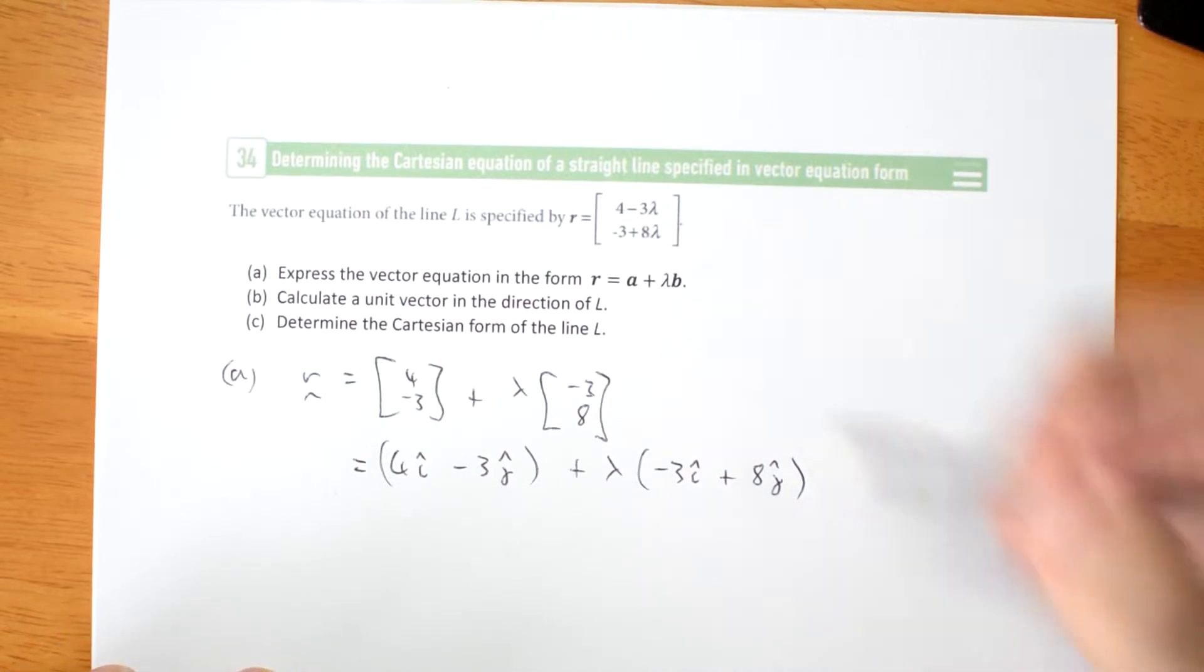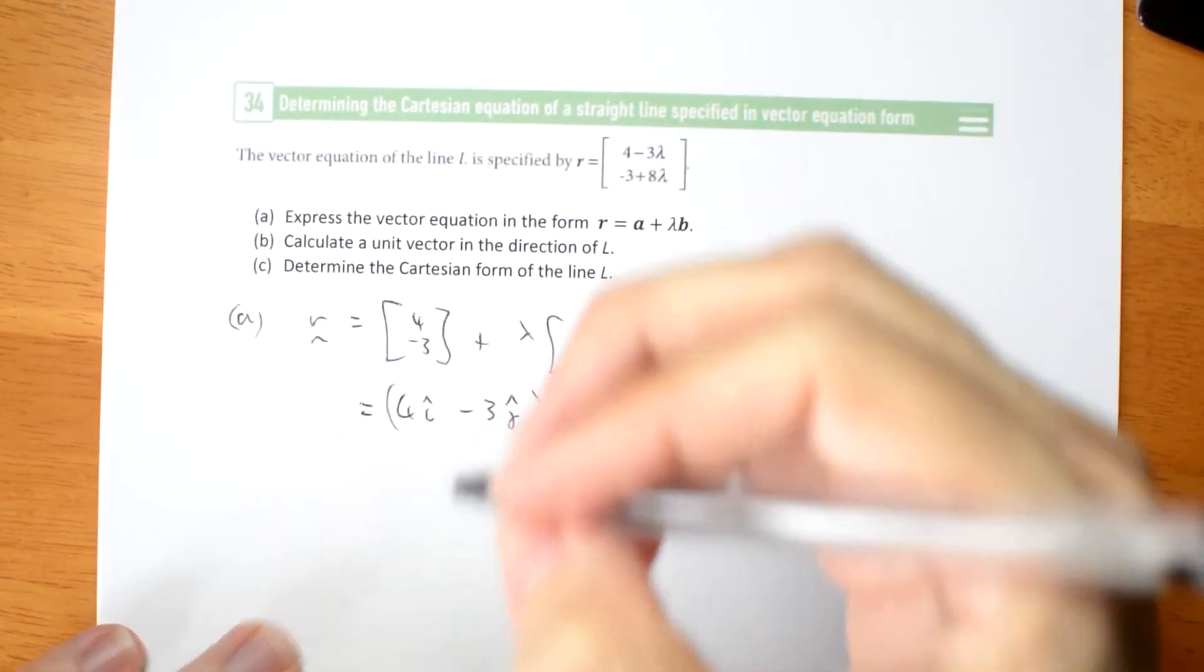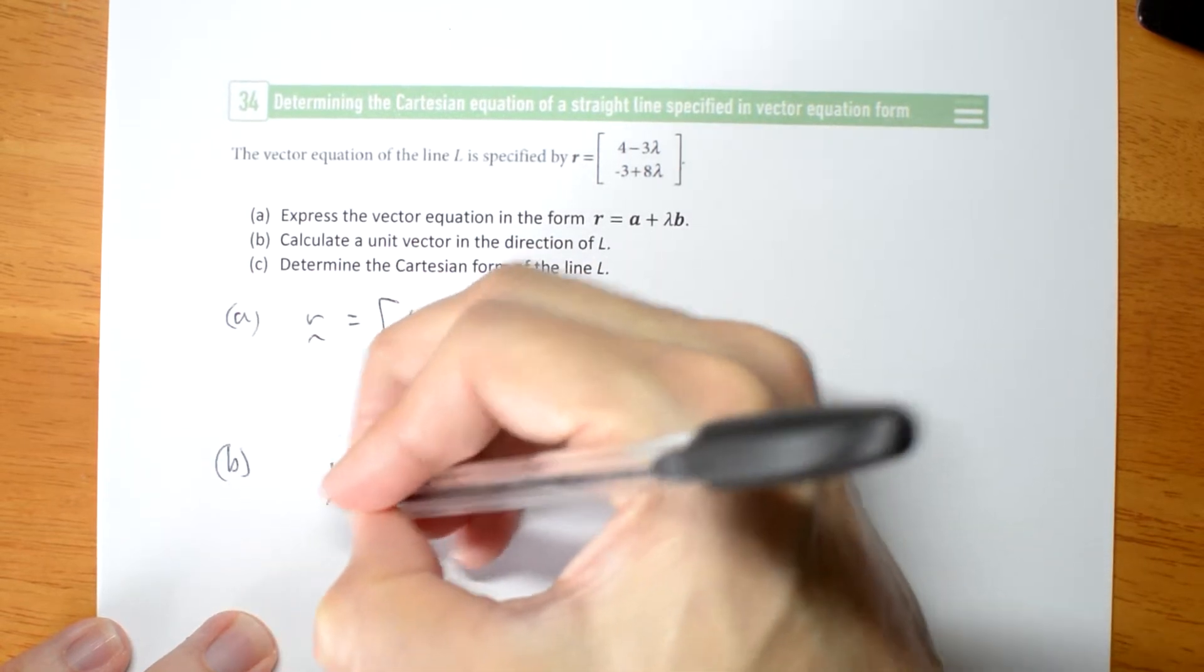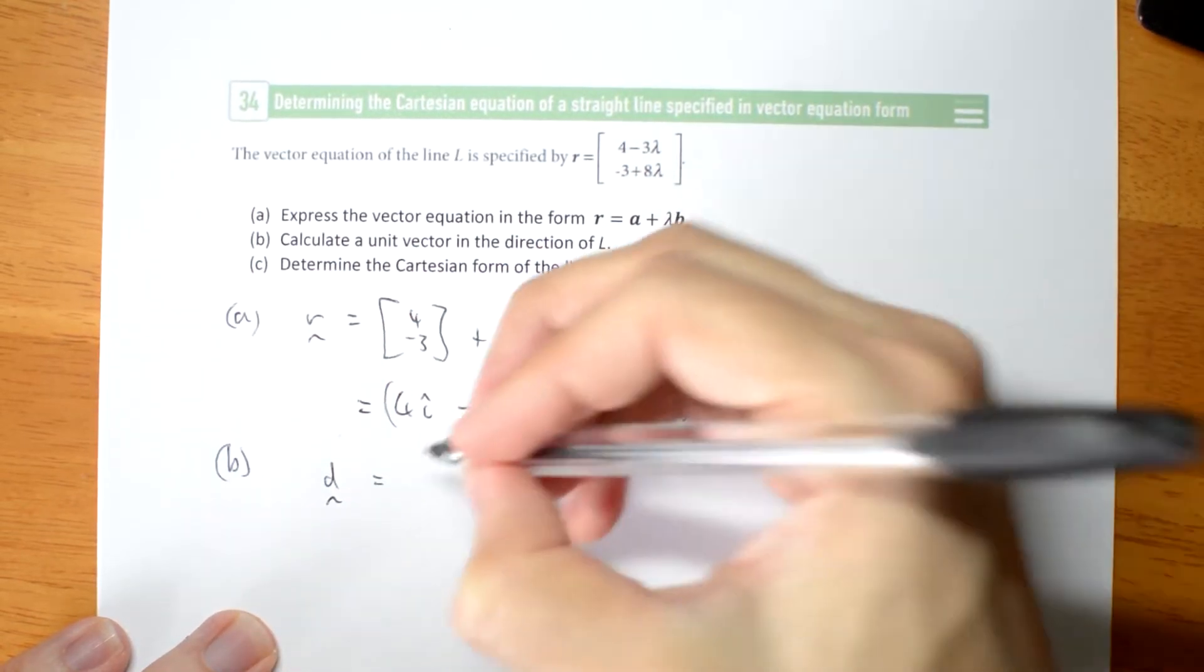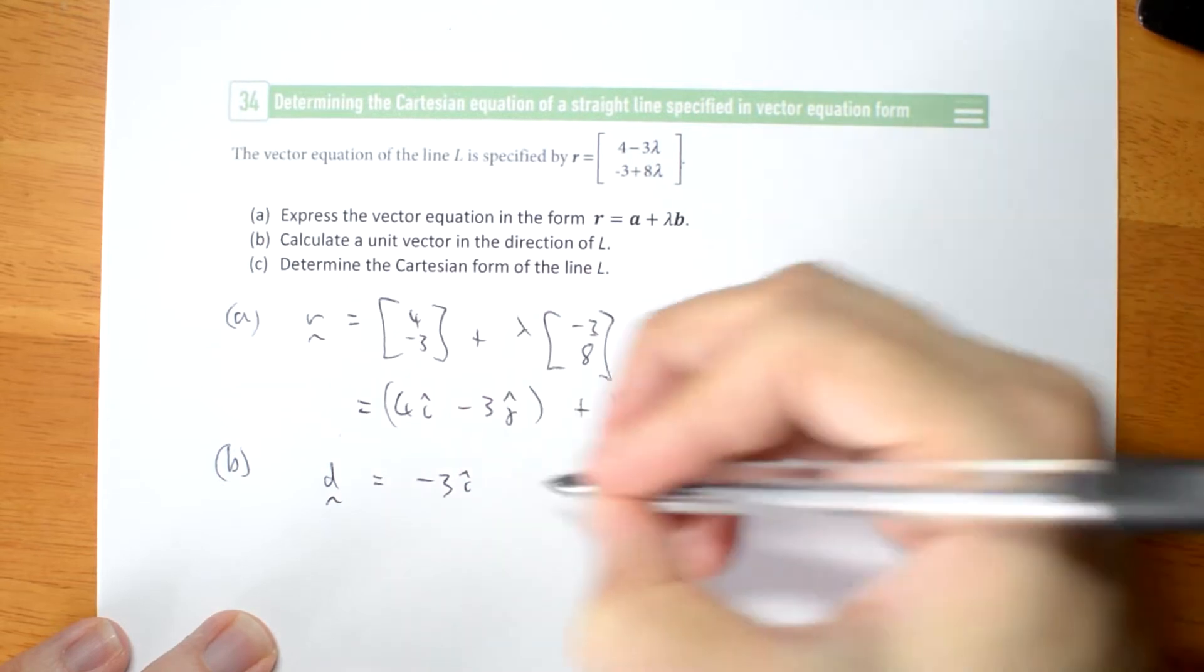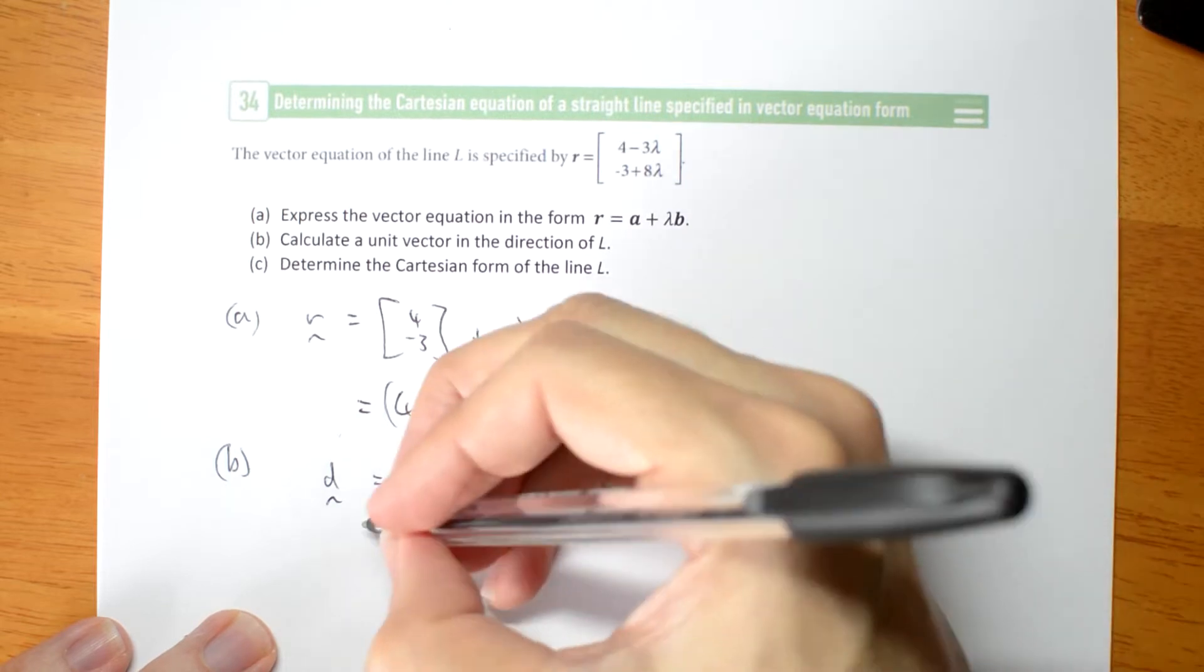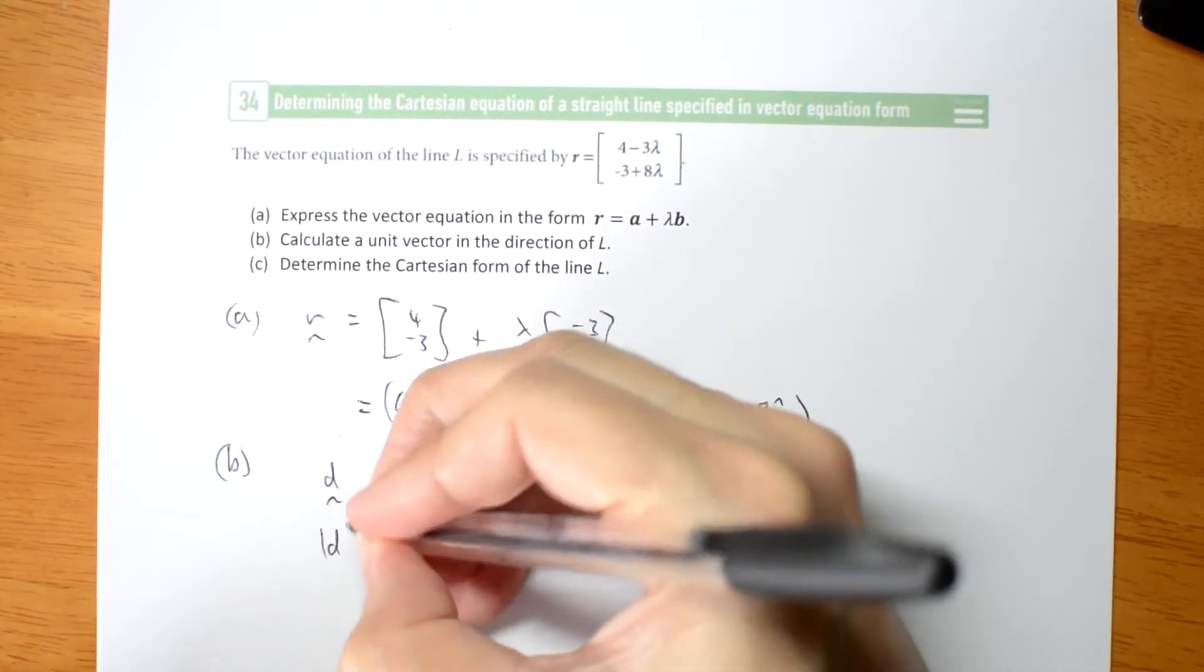Calculate a unit vector in the direction of L. Well, this vector gives me the direction of L. So to get a unit vector, let's work like this. The direction line is minus 3i plus 8j. So a unit vector then depends on the length of D.